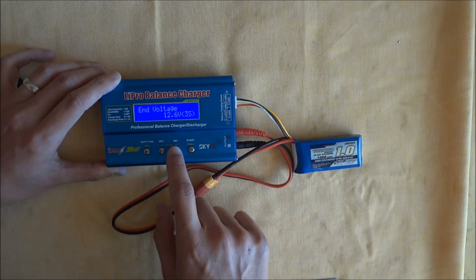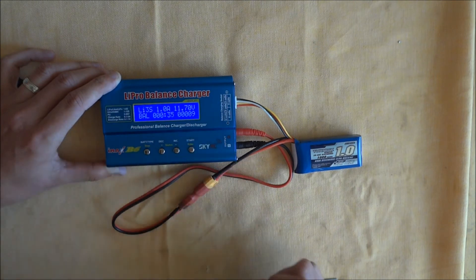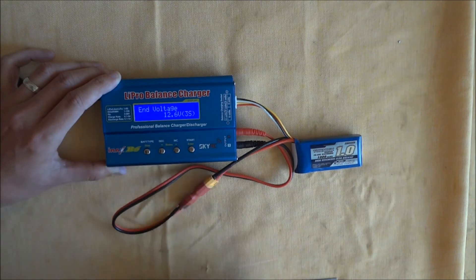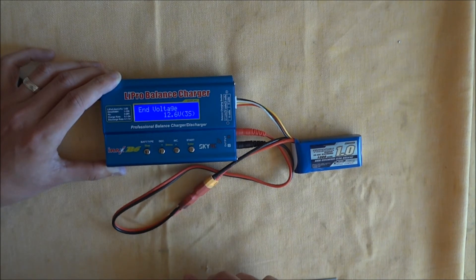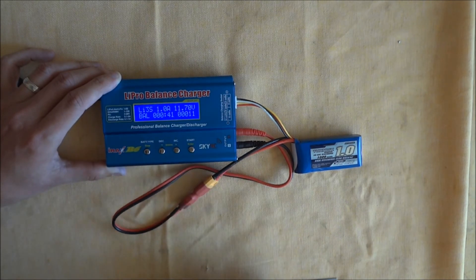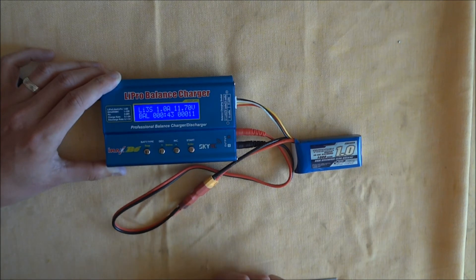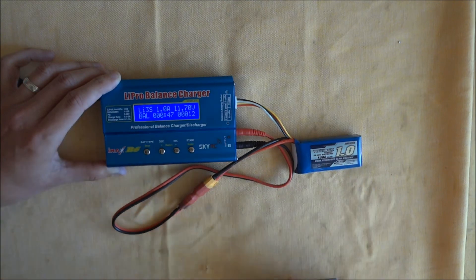You can see the end voltage of a 3S is 12.6 volts, fully charged. And you can see current voltage is 11.7, so that'll finish. When it finishes, it'll finish at 12.6 volts, and it'll beep, and it'll say when it's full. It'll beep, and then you can press stop and disconnect.